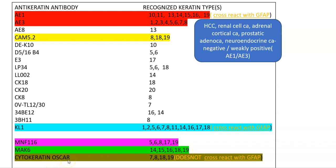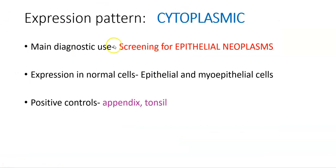Cytokeratin OSCAR is expressed by cytokeratins 7, 8, 18, and 19. An important point about it is that it does not cross-react with GFAP. Pancytokeratin markers show cytoplasmic positivity. Their main diagnostic use is for screening of epithelial neoplasms; they are present in epithelial and myoepithelial cells. The positive control is appendix and tonsil.